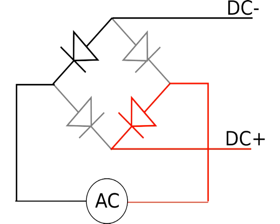What does a rectifier do? A rectifier takes an alternating current source and converts it into DC current. This is done because a diode will only allow electricity to flow through it one way. I'll show you an animation on the screen of the rectifier working so you can understand it a little bit better.